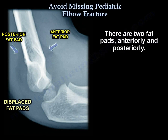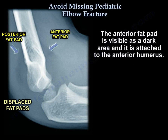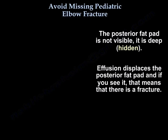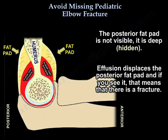There are two fat pads — anteriorly and posteriorly. The anterior fat pad is visible as a dark area and is attached to the anterior humerus. The posterior fat pad is not normally visible; it is deep and hidden. An effusion displaces it, and if you see it, it means there is a fracture.